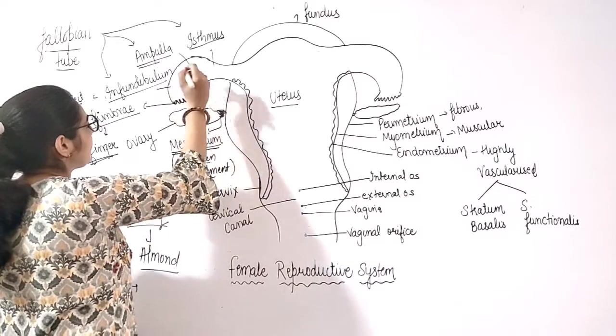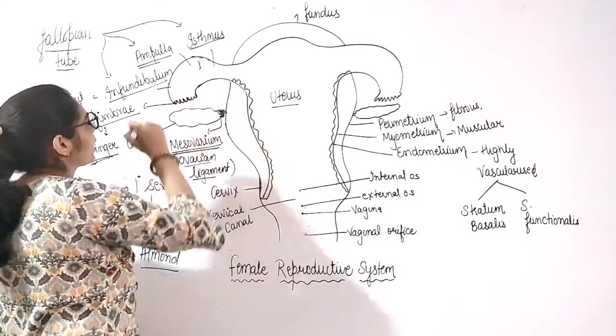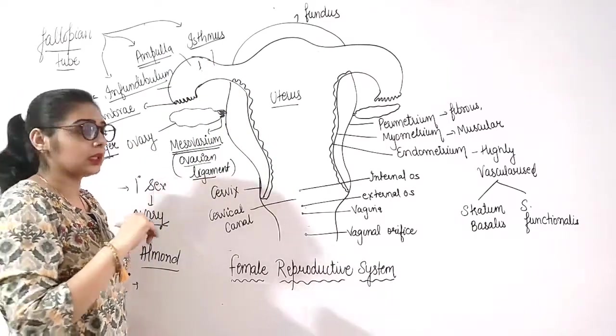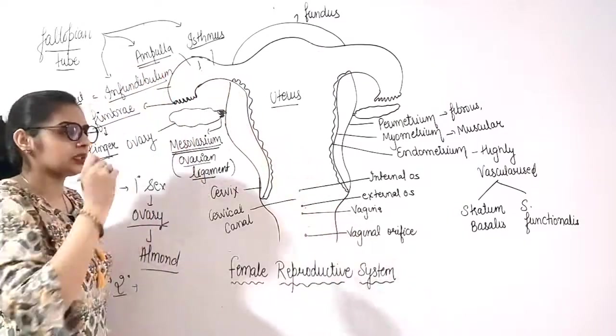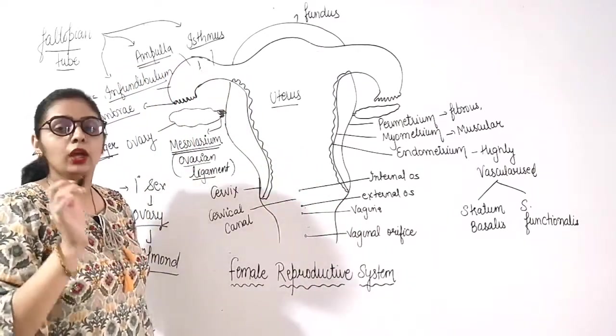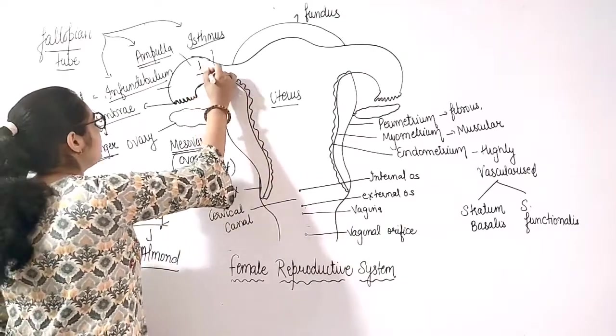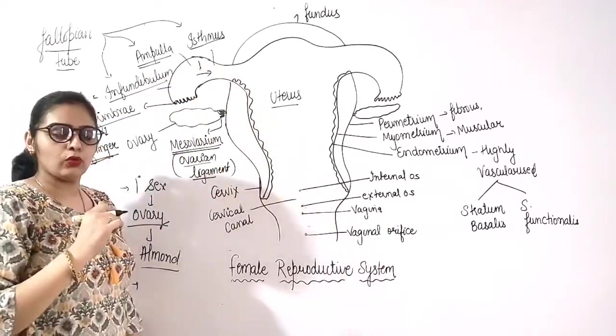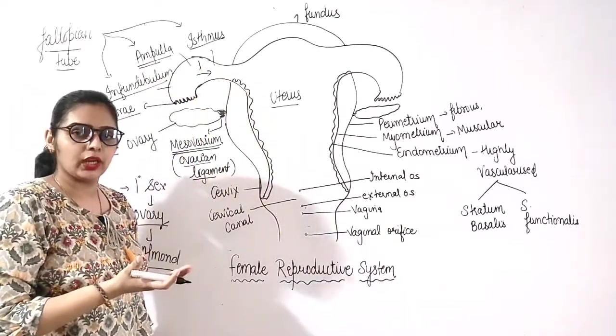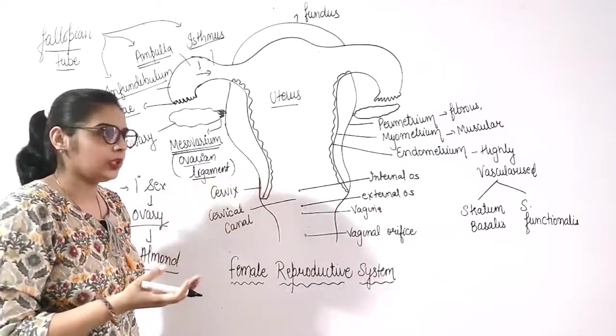When female gamete reaches ampulla isthmus junction, and if male gametes enter, fusion happens, then fertilization will occur. If the female gamete, the ovum, moves further ahead, then fertilization will not occur.